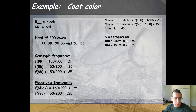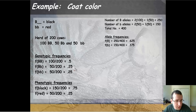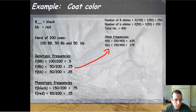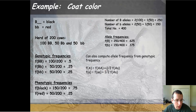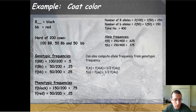There is a shortcut to get to allele frequency if you already know the genotype frequency. For the dominant allele, take the total frequency of the homozygous dominant plus half the frequency of the heterozygous. For the recessive allele, take the total frequency of the homozygous recessive plus half the frequency of the heterozygous.